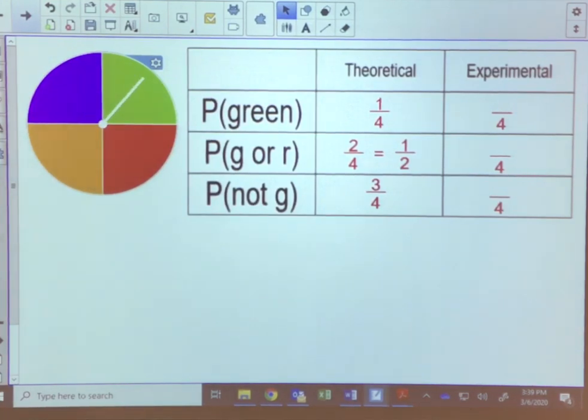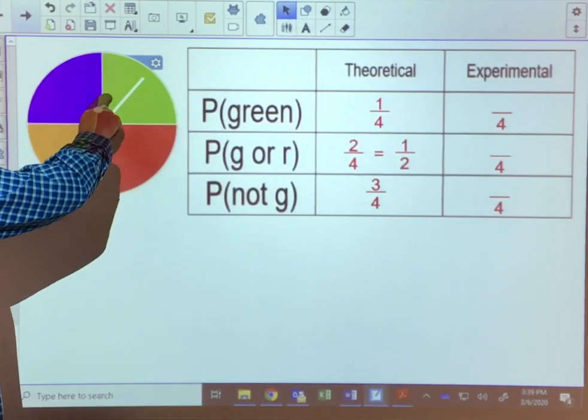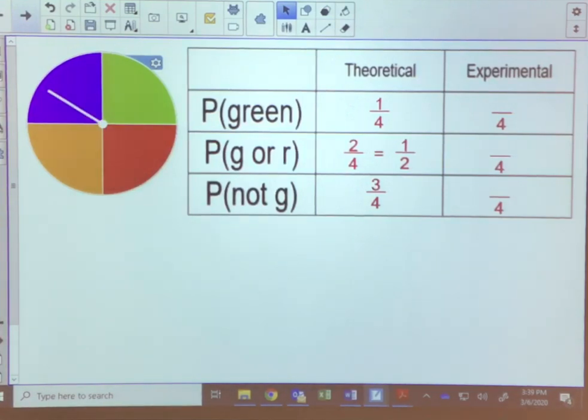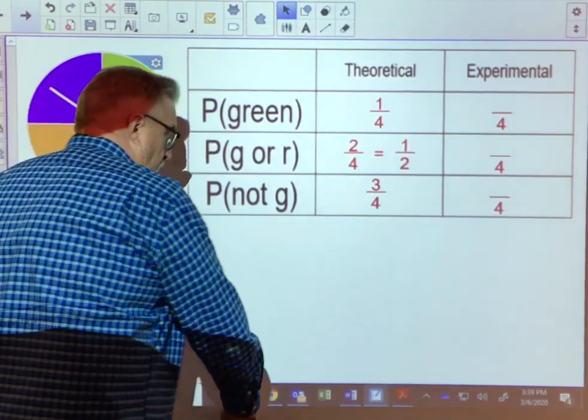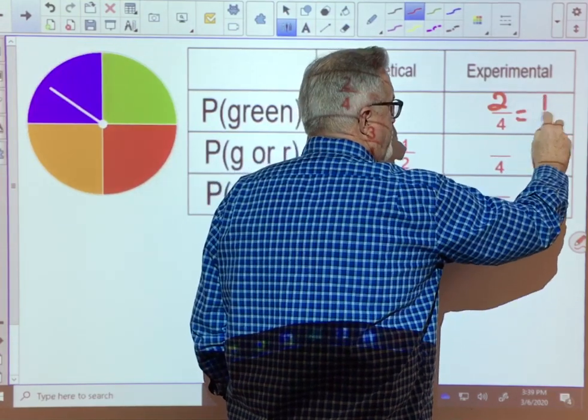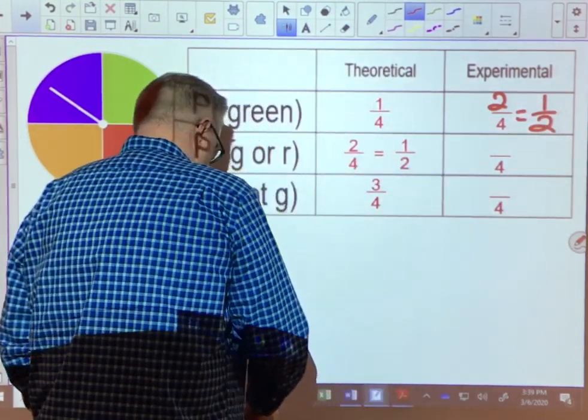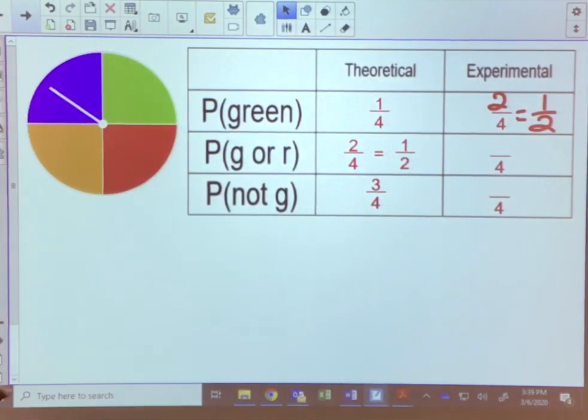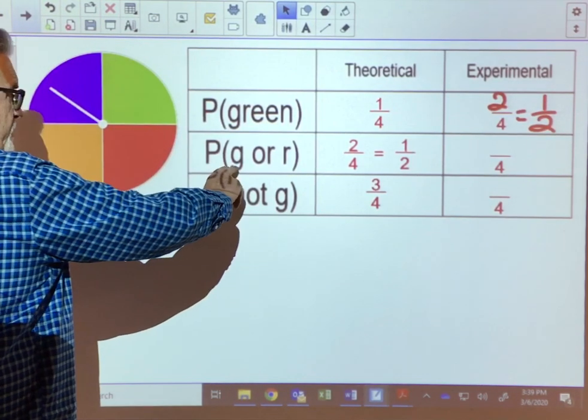So there's our first spin and we get a green first try. Let's try it again. We get a purple. Third try we get another green. And then the fourth try we get a purple. So our experimental probability came up to two over four, which is one half.